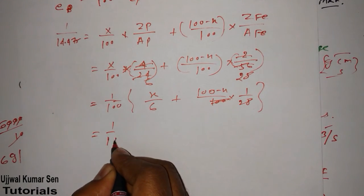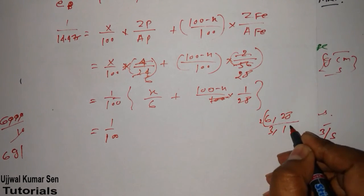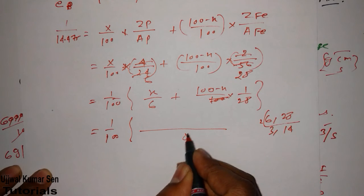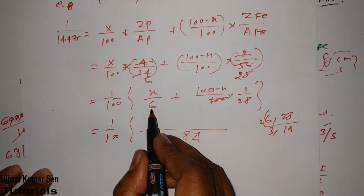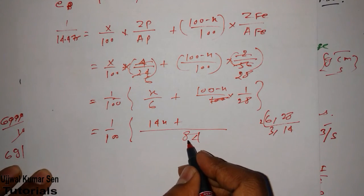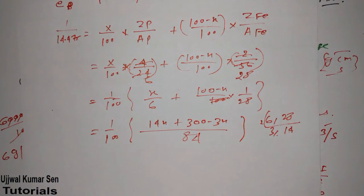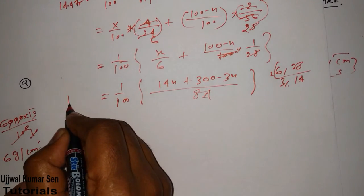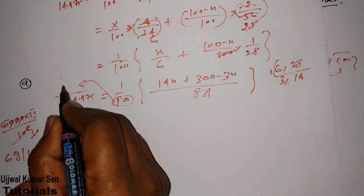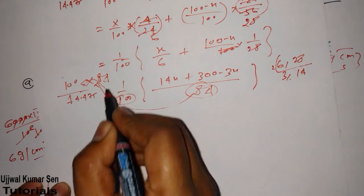6, 28, 2, 3, 14. So 2 multiple 6 into 14 is equal to 84. 14X plus 3, 28 is 84, so 300 minus 3X. I need to do little bit calculation. I have to send this 100 to this side, even I can send this 84 to this side. 8400 divided by 14.475. I need to use calculator. It's 580.31.